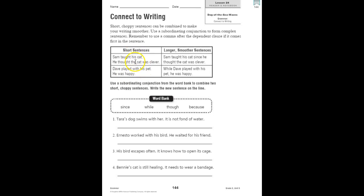It has some examples of the two short sentences and how to make them longer and smoother. And that's what you're going to do in one through four. You're going to use a subordinating conjunction from the word bank to combine the two choppy short sentences and then write the new sentence on the line.